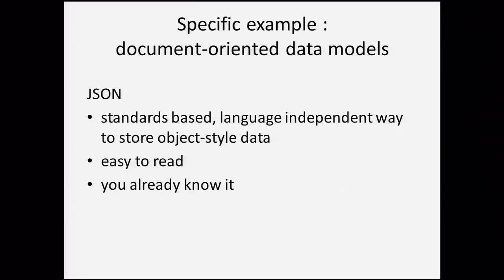I want to talk about the data model in the space I know most about, which is document-oriented data models. These are really all JSON-inspired or based on JSON. Several products in this space use JSON as their fundamental building block for documents. The nice thing about JSON is it's a standards-based, language-independent way to store object-style data. We don't want the data model too coupled to one programming language because the languages we use change over time.